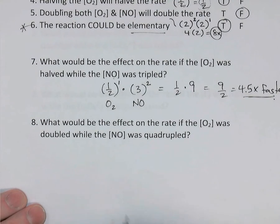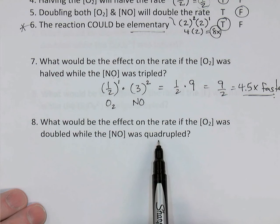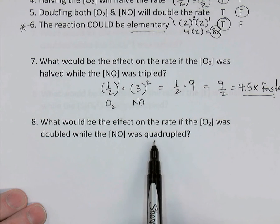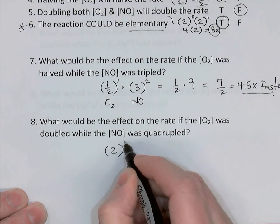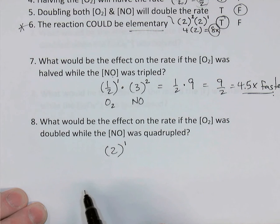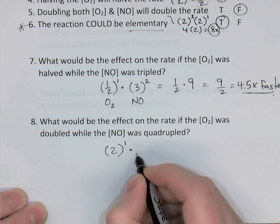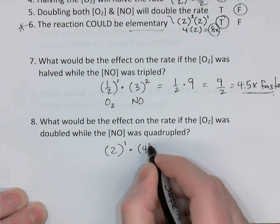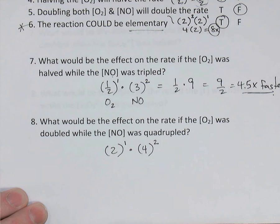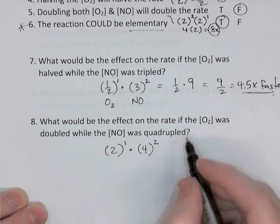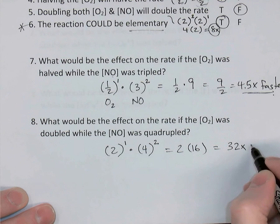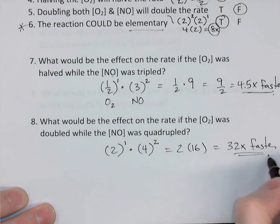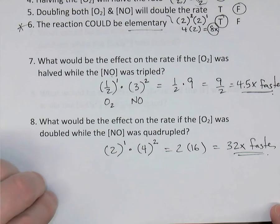The last question for this reaction: what would be the effect on the rate if you double the oxygen concentration while quadrupling the NO concentration? Oxygen, being first order: 2 raised to the power of 1. NO, being second order: 4 raised to the power of 2, which is 16. So 2 times 16 — the rate will end up being 32 times faster.